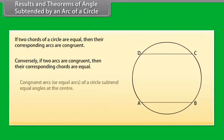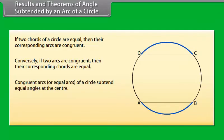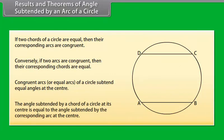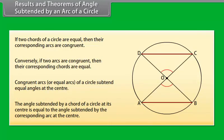The second result says that the congruent arcs or equal arcs of a circle subtend equal angles at the center. That means the angle subtended by a chord of a circle at its center is equal to the angle subtended by the corresponding arc at the center.